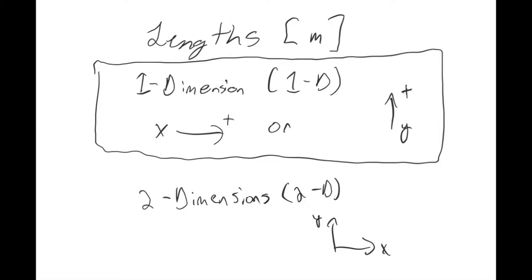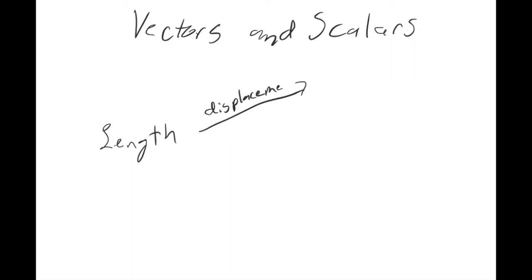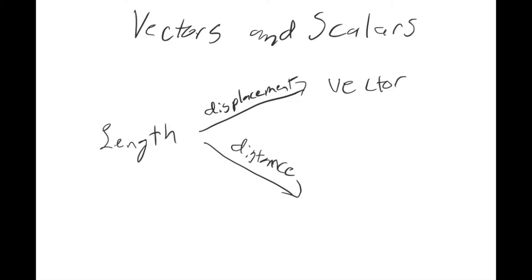Now we're going to make it more complicated because in physics, things are either vectors or scalars. If we use the word displacement, we're talking about a vector. And when we use the term distance, we're talking about a scalar. These are important definitions to keep in your head.